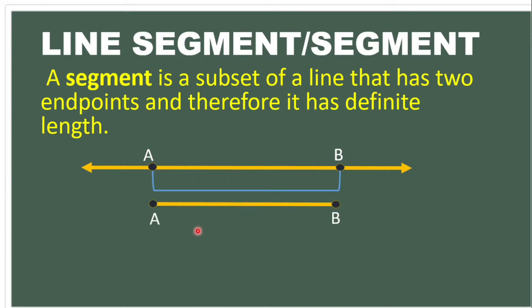So we can name this as line segment AB or line segment BA. Point A can come first, then B, or B can come first, then A — you can go either way.